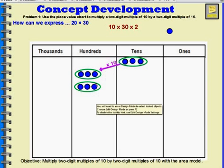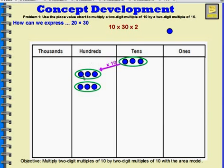So the answer to 20 times 30, and the answer to 10 times 30 times 2, is 1, 2, 3, 4, 5, 6 hundreds — 600. And that's the same answer we had before.